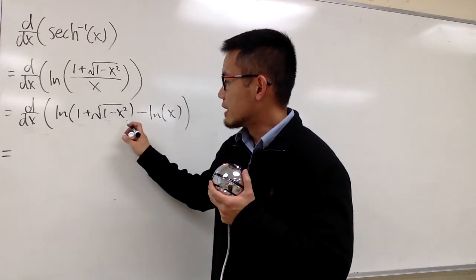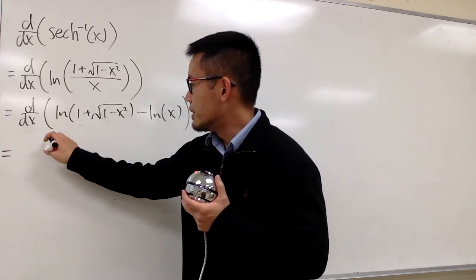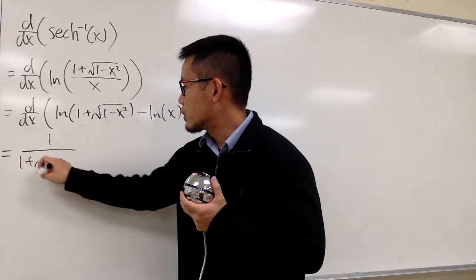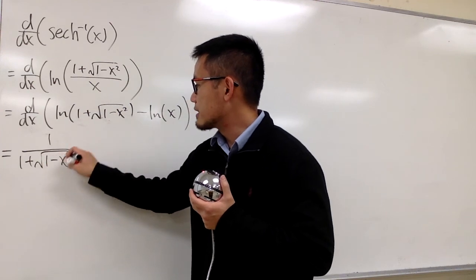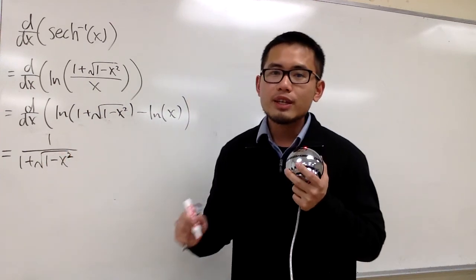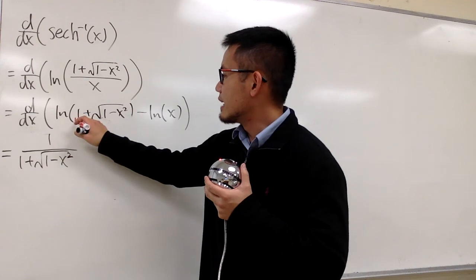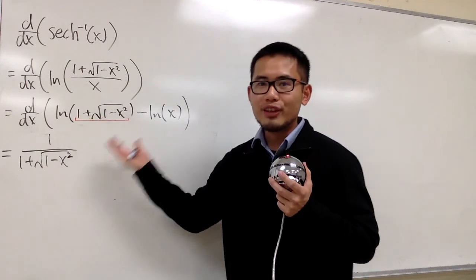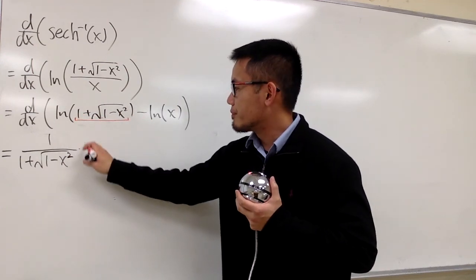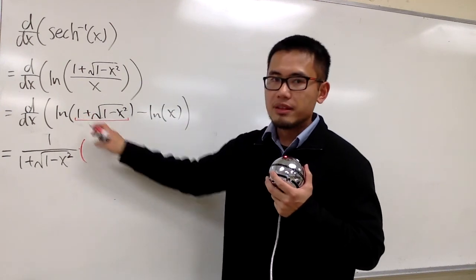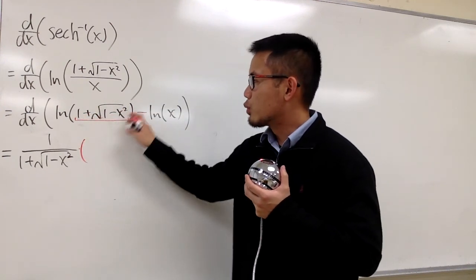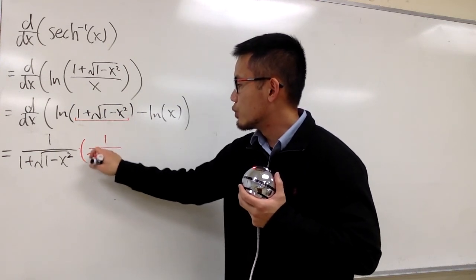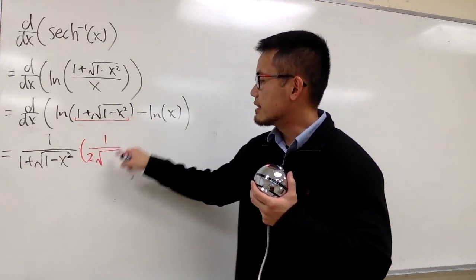First, the derivative of ln of something is just going to be 1 over the inside, which is 1 plus square root of 1 minus x squared. And the chain rule says we have to look at the inside and multiply by the derivative of the inside. The derivative of 1 is 0, and the derivative of square root of something is going to be 1 over 2 times the square root, and the inside stays for now.